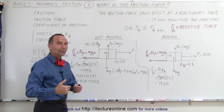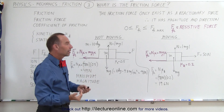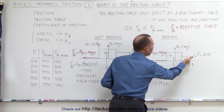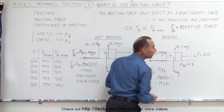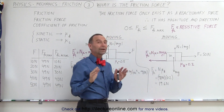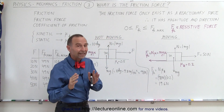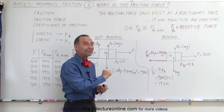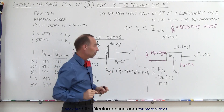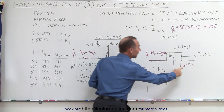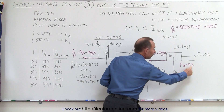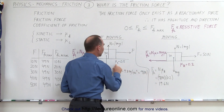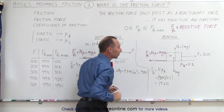Now let's say we have the same block with the same applied force of 50 newtons, but now the block is moving. You no longer have a static coefficient of friction — you now have a kinetic coefficient of friction, and typically the kinetic coefficient of friction is a smaller number than the static coefficient of friction.